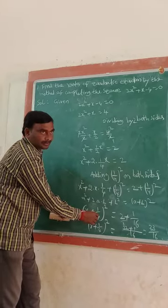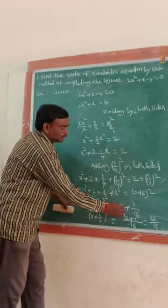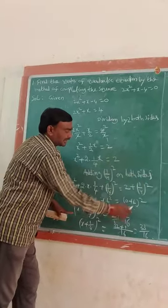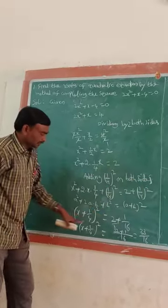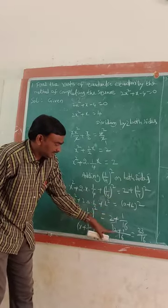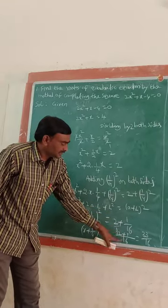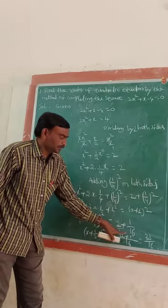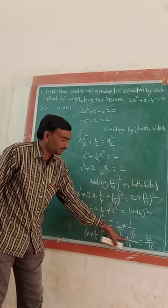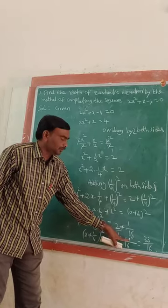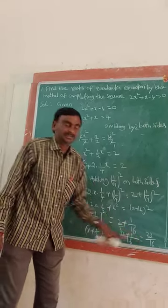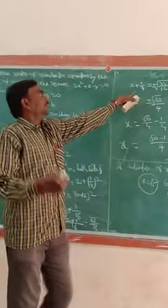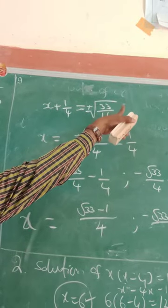Here b is 1/4, whole square. It is equal to 2 plus (1/4)². Now (1/4)² = 1/16. Simplifying the right side: 2 = 32/16, and 32/16 + 1/16 = 33/16. So (x + 1/4)² = 33/16.